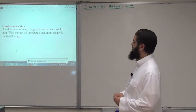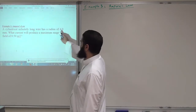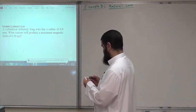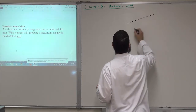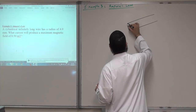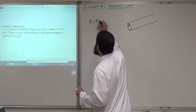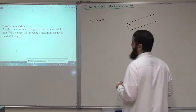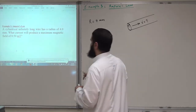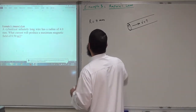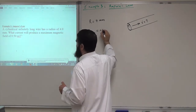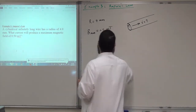This is the third example on Ampere's law. We have a cylindrical infinitely long wire with a radius of 4 millimeters. What current will produce a maximum magnetic field of 0.5 milli Tesla? Let me draw the situation: this is the wire with capital R equal to 4 millimeters. Where does the maximum magnetic field occur in this situation?